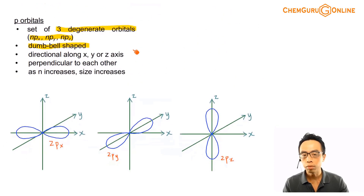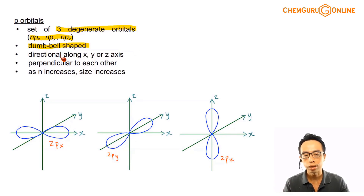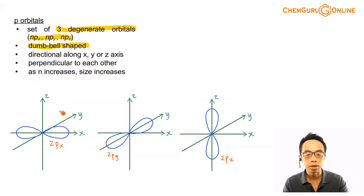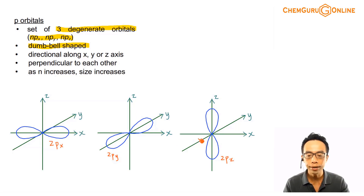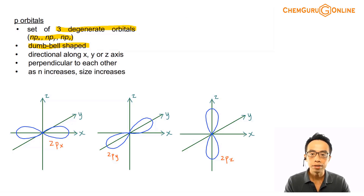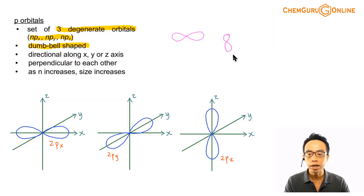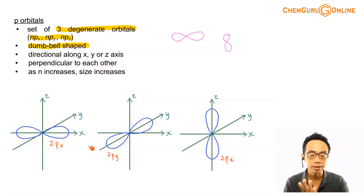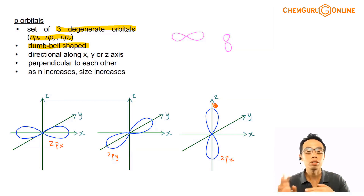Let's look at P orbitals. Now P orbitals — we have 3 of them for my P subshell. We call them PX, PY, PZ. So the XYZ is a subscript we put after the P. So if I'm drawing 2P orbitals for my 2P subshell, one will be 2P subscript X, this is 2P subscript Y, and this is 2P subscript Z. For all of them, the shape is exactly the same. We call this a dumbbell shape — to me it looks like an infinity sign, so my P orbital always looks like an infinity sign. Or if it looks like the number 8 to you, also we can do that. These 3 orbitals are the same size, but the difference is they're pointing in different directions.